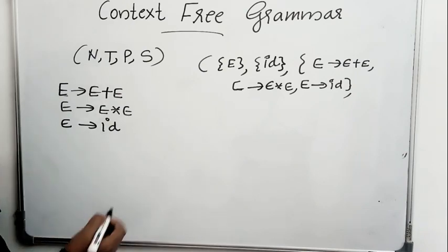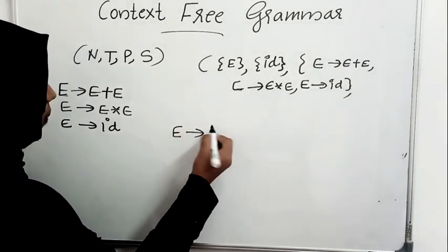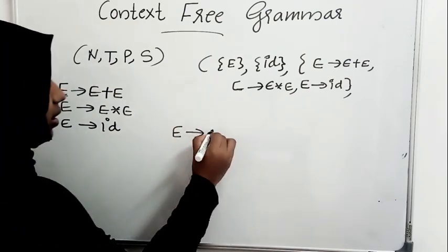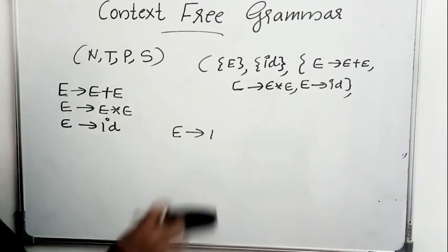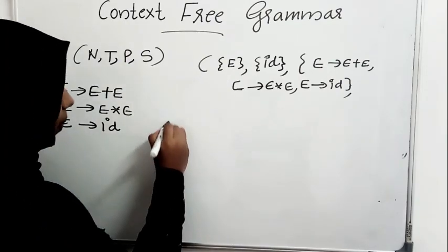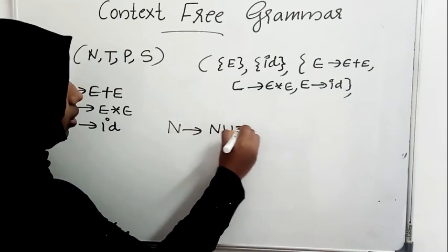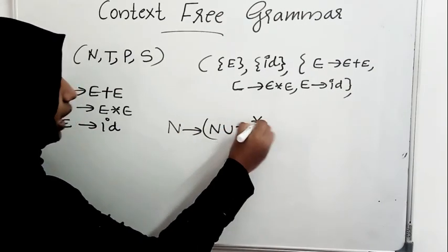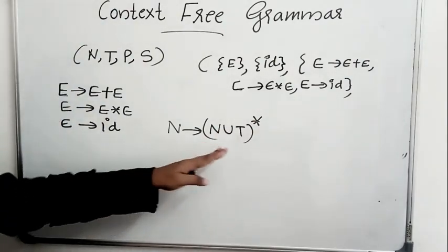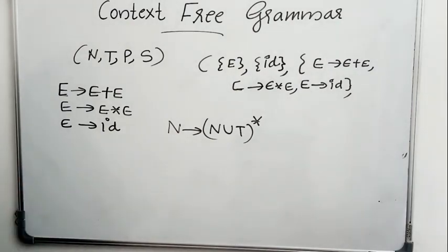In case of a production, there will be only one non-terminal on the left-hand side, and there can be any number of terminals or non-terminals on the right-hand side. In context-free grammar, the production rules are of the format: some non-terminal gives any string from (non-terminal union terminal)*, meaning any string made up of non-terminals and terminals can appear on the right-hand side. But on the left-hand side, you will have a single non-terminal.